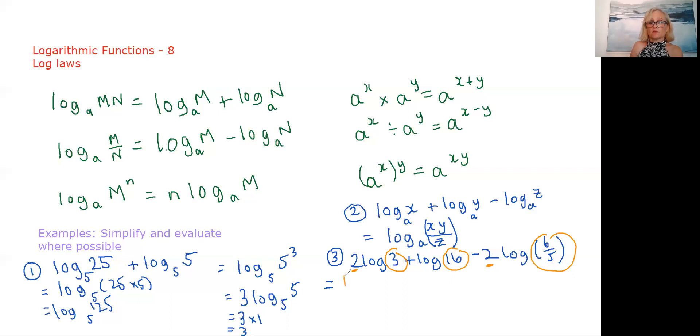So I would come in and say log of 3 squared plus log of 2 to the 4th. So I'm just converting anything to powers of primes, and I'm bringing any numbers out the front in as a power, minus log of—now we're going to square this. 6 is 2 by 3, 5 of course is just 5, and we're going to square that.